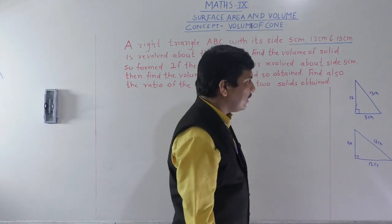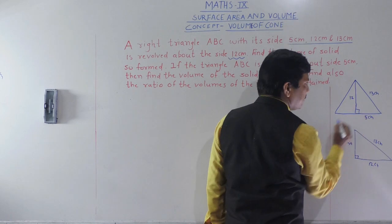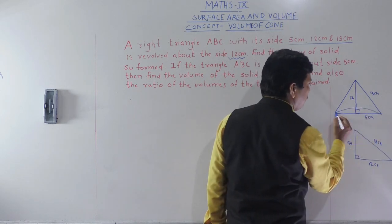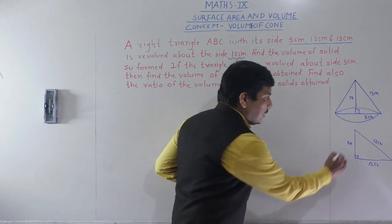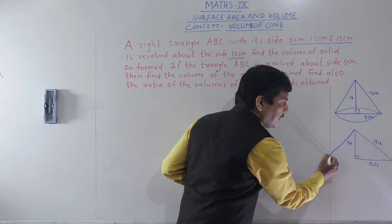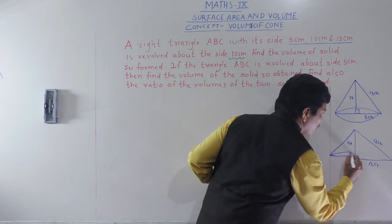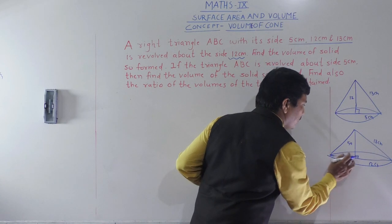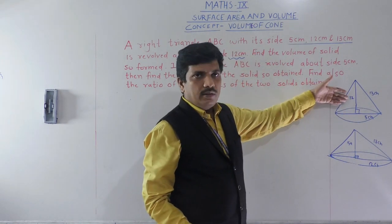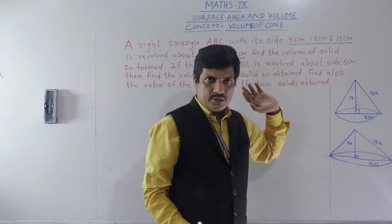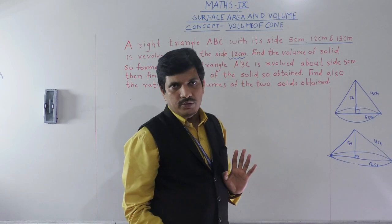When the triangle is revolved around the 5 cm side, it forms another right circular cone. Both are right circular cones, but in the first cone the radius is 5 cm, and in the second cone the radius is 12 cm. That is the difference between these two.